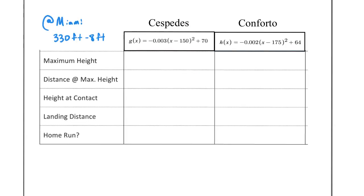If we start to take a look at the two functions that we're given in this sample here, we're looking at Yoenis Cespedes, which I'm going to call g(x), his function that's going to model his hit, and Michael Conforto, I'm going to call h(x), that's going to model his hit path. Just for clarity purposes, we'll say the Mets this past week played at Miami. Miami has a wall that's 330 feet from home plate and it's 8 feet tall.